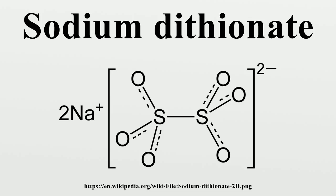Sodium dithionate is produced by the oxidation of sodium bisulfite by manganese dioxide: 2 NaHSO3 + MnO2 → Na2S2O6 + MnO + H2O. Alternatively, it can be prepared by the oxidation of sodium sulfite by the silver cation.